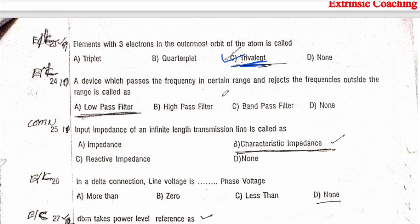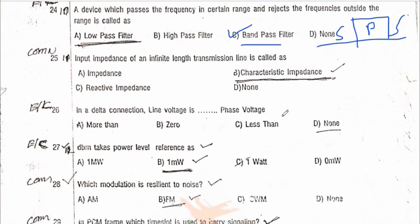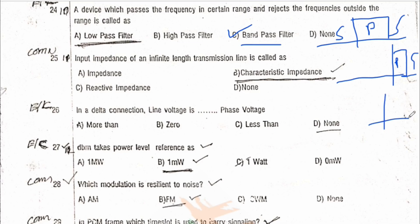A device which passes frequencies in a certain range and rejects frequencies outside that range is called a band pass filter — not a low pass filter. A low pass filter only passes low frequencies; a high pass filter only passes high frequencies, stopping low frequencies.